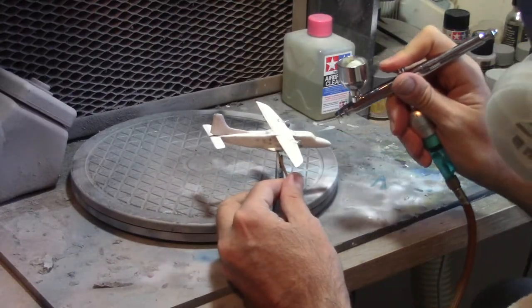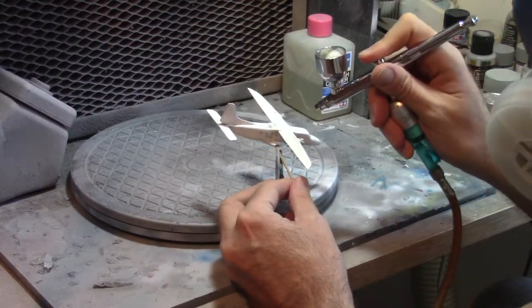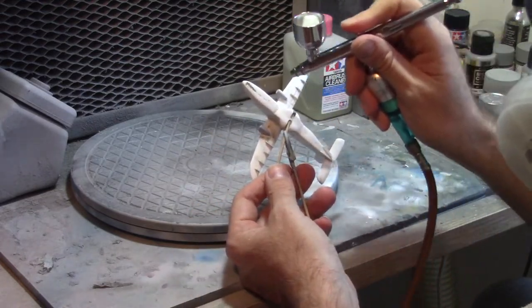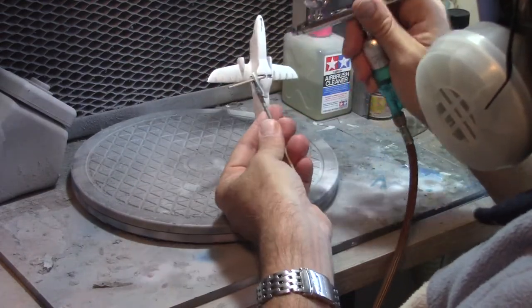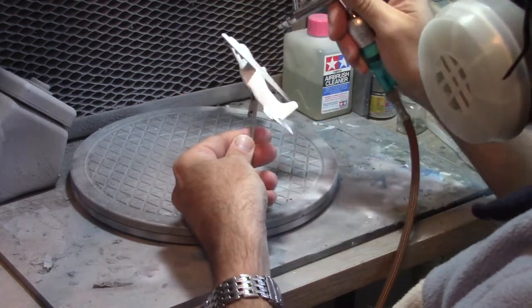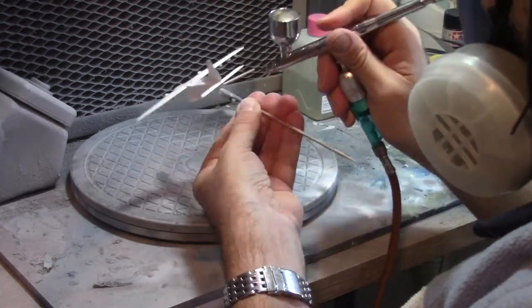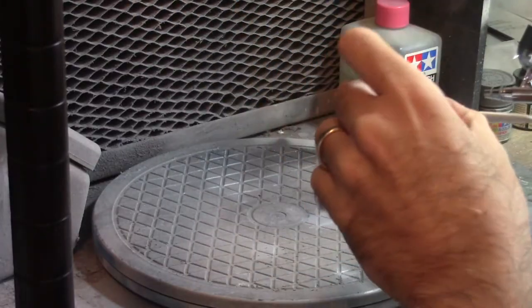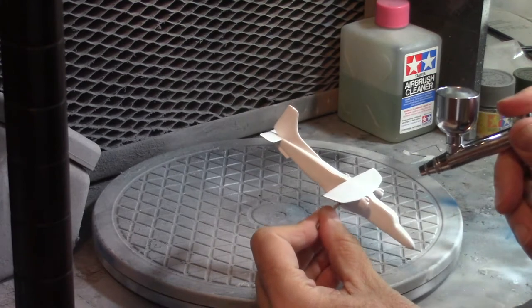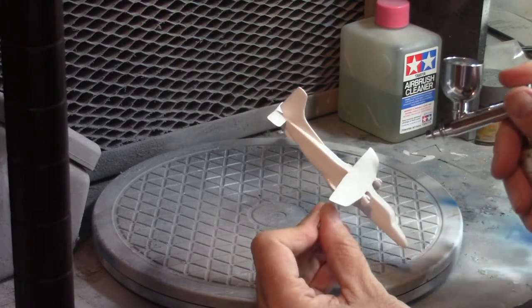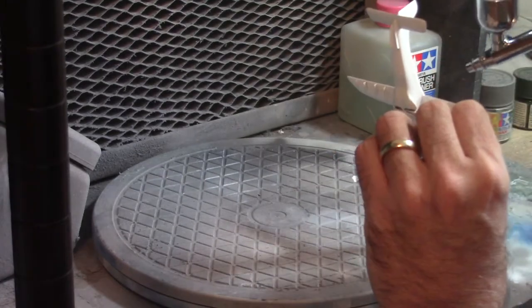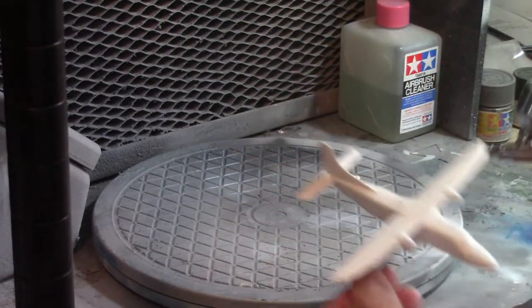So we're now starting the paint job on that Dornier 228. For that I used the simple standard shiny white from Tamiya, but I have to say that this time I had to put two layers as there was some shade. So of course the first time I let it dry overnight and then I applied a second layer the following day and the result was quite satisfactory.